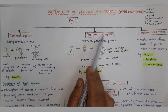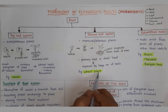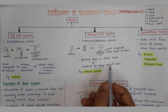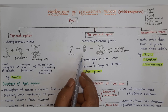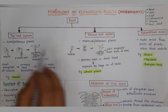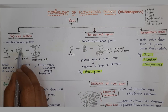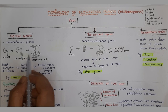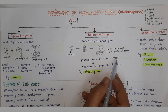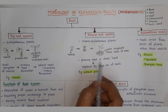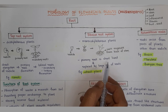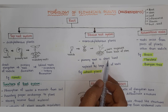An example of the fibrous root system is the wheat plant. The major difference between tap and fibrous root systems: in tap root, the primary root is persistent throughout the life of the plant; in fibrous root, the primary root is short-lived and absent throughout the life of the plant.